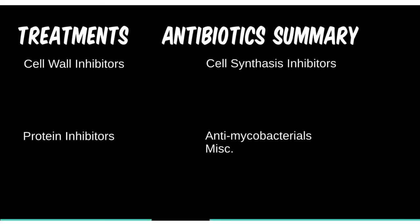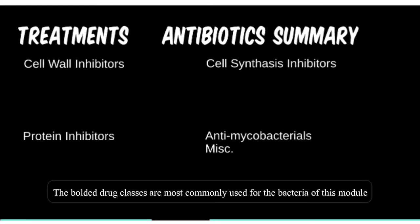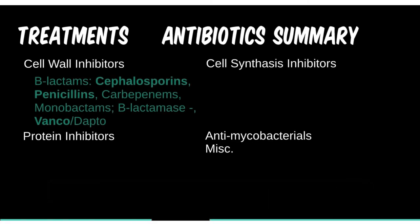Antibiotics can most generally be categorized by their broad function: cell wall inhibitors, cell synthesis inhibitors, protein inhibitors, and miscellaneous. The cell wall inhibitors include the penicillins, cephalosporins, carbapenems, and monobactams. These antibiotics specifically bind to different proteins in the bacterial cell wall and inhibit growth.